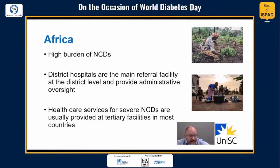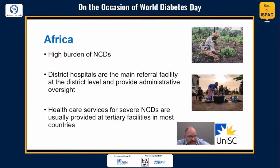Primary health care facilities, more commonly known as health centers, are generally the first point of contact between the population and the health system, but they often do not have the capacity, basic equipment, or medicines to manage chronic and severe NCDs. District hospitals provide administrative oversight to first-level care facilities, but they are not usually able to manage chronic and severe NCDs. As a result, health care services for severe NCDs are usually provided at tertiary facilities, which exacerbates health inequalities and contributes to high premature mortality from NCDs in the region.